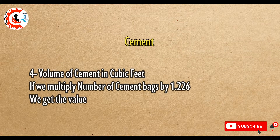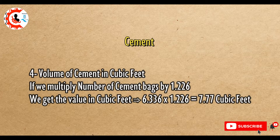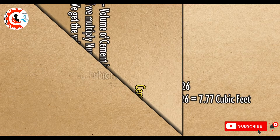Volume of cement in cubic feet: if we multiply the number of cement bags by 1.226, we get the value in cubic feet. 6.336 × 1.226 equals 7.77 cubic feet.